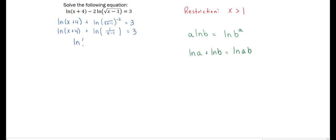Now we're going to use our other log law to write this addition as a single term. So this is the same as ln of x plus 4 times 1 over x minus 1 equaling 3.